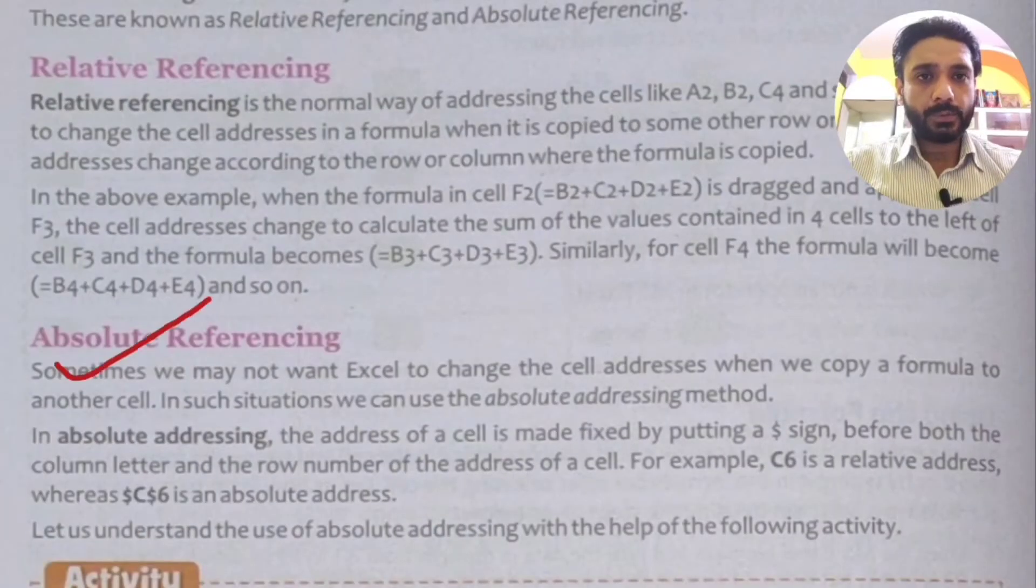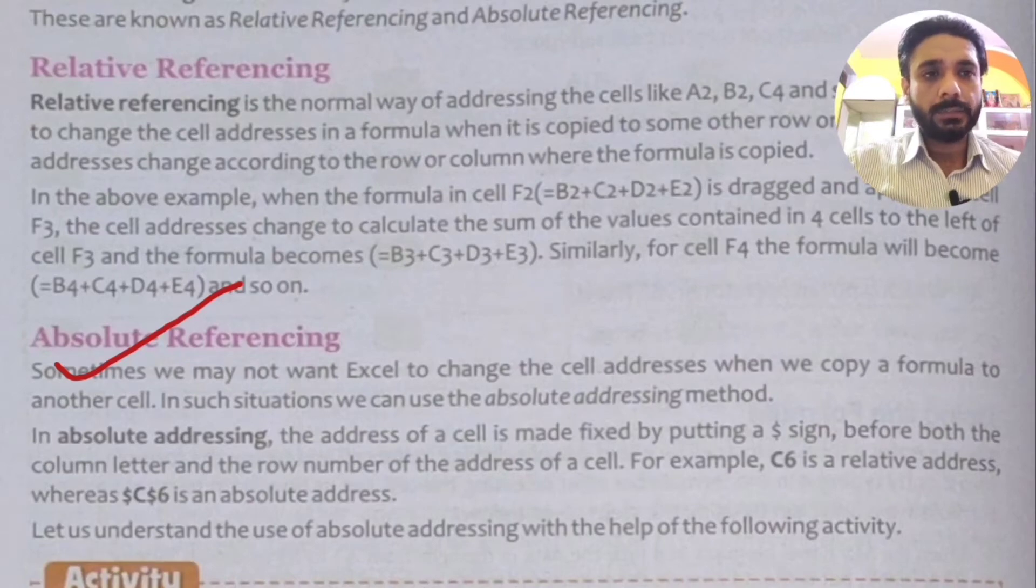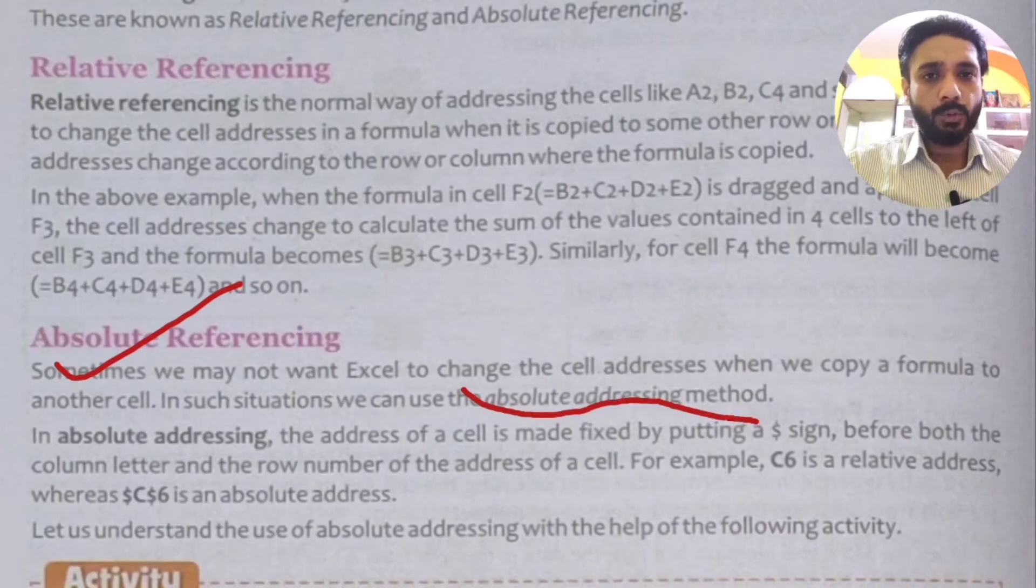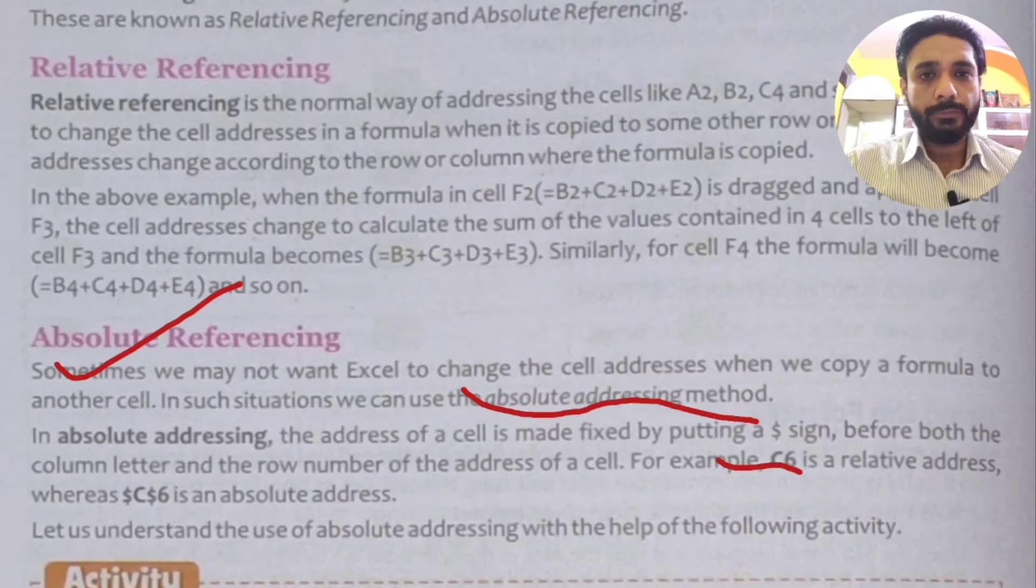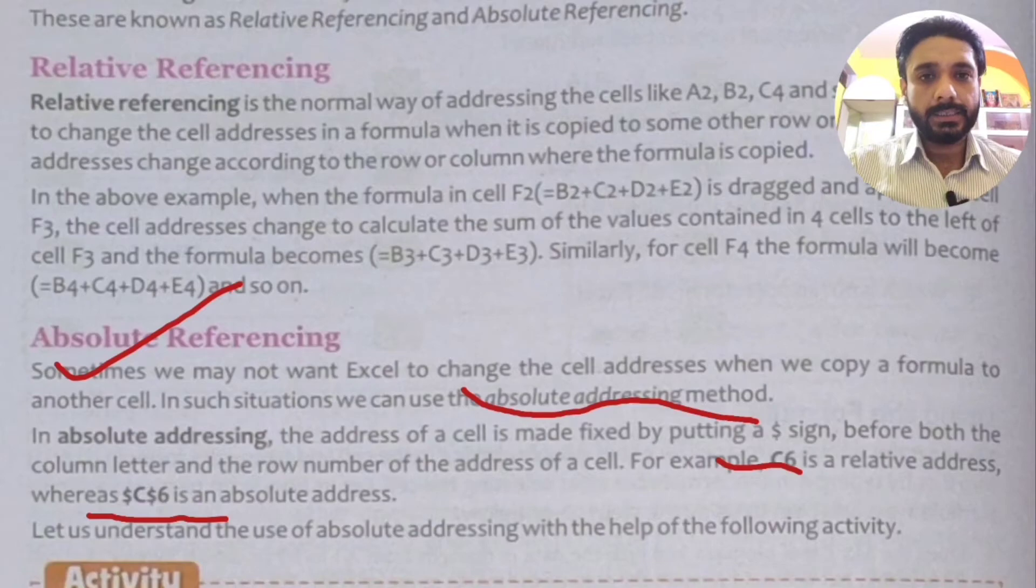But in absolute referencing, sometimes we may not want Excel to change the cell addresses when we copy a formula to another cell. This situation is the absolute referencing method. So in absolute referencing method or absolute addressing method, what do we do? The address of a cell is made fixed by putting a dollar sign before both the column letter and row number. So if we write column and row number, we will do dollar sign. Like if we write relative referencing in a cell address is C6, so if we have to write absolute referencing, how do we write? We will mention dollar C dollar 6. So C column is the sixth row.